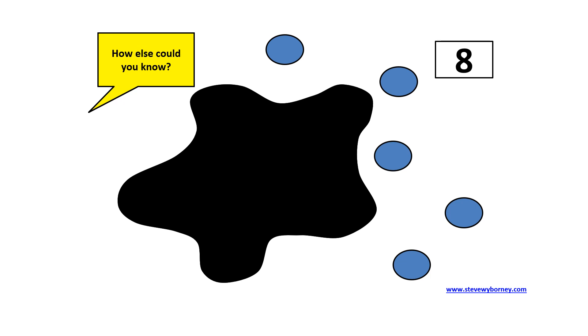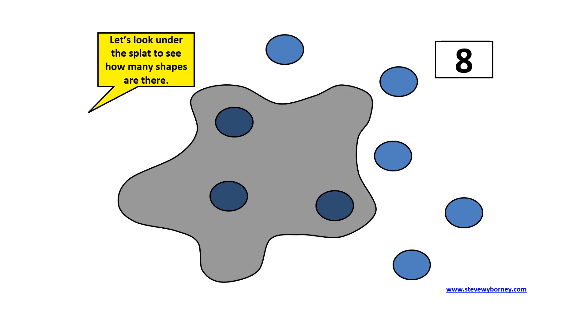Splat. How else could you know how many are under the splat? Let's look under the splat to see how many there are. There are three shapes hiding. Is that what you were thinking?